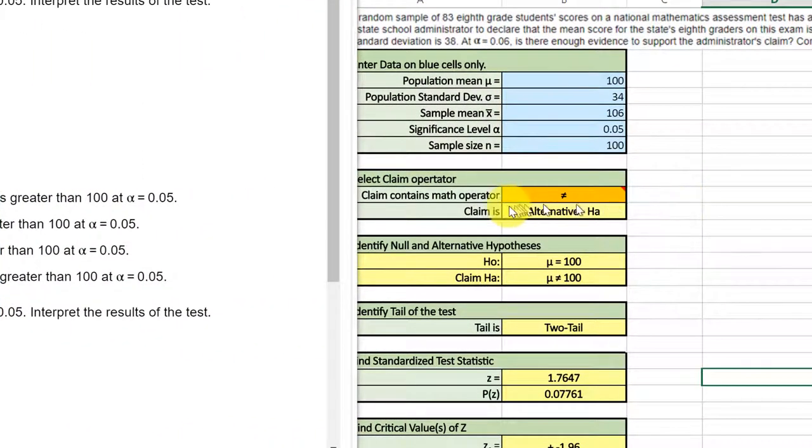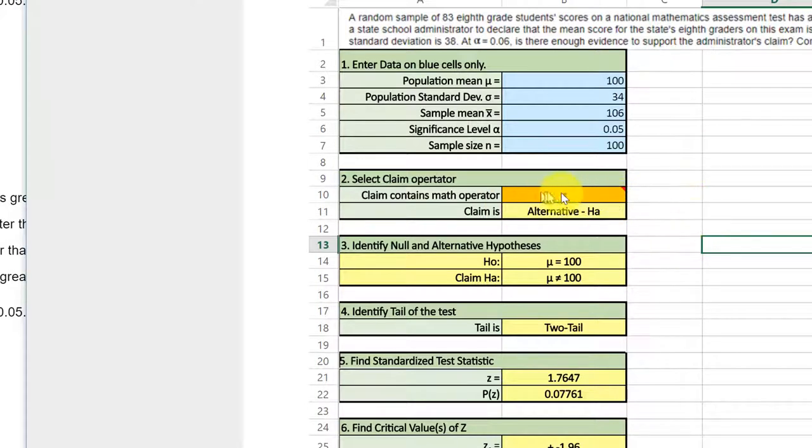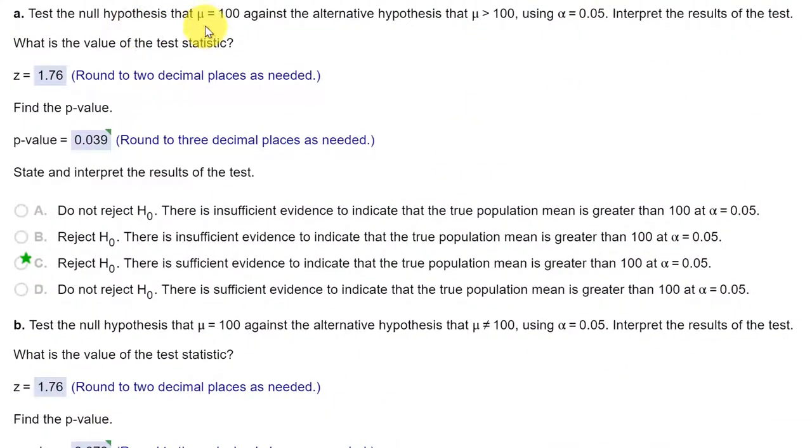We have the blue data in, and now we need to select the math operator. Let's inspect the hypothesis. It says test the null hypothesis mu equals 100 against the alternative that mu is greater than 100. The null always has to be a form of equality. The alternative has to be the complement of the null. So even though they're not saying that the alternative is the claim, the fact that it's got a greater than operator tells me that we should consider the alternative to be the claim in this particular problem.